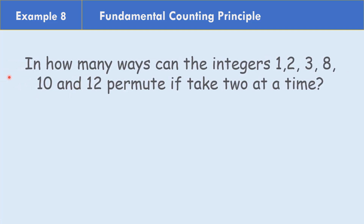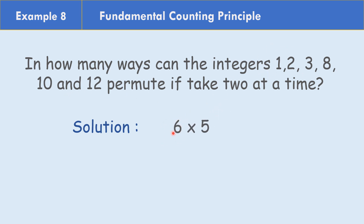For problem number eight, in how many ways can the integers 1, 2, 3, 8, 10, and 12 be arranged if taken two at a time? We have six numbers. For the first decision we have six options; once one is chosen, five remain. So 6 × 5 = 30.